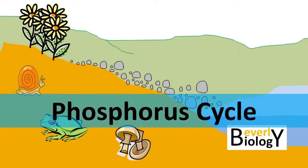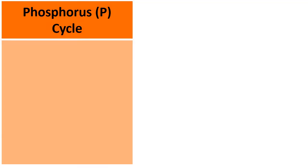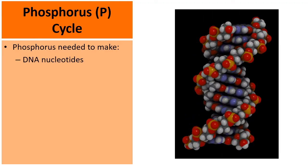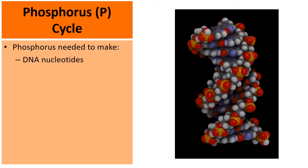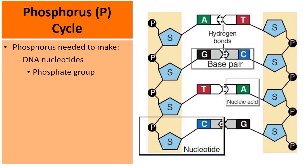The topic of this presentation is the phosphorus cycle. Why do we need phosphorus? Here's a molecule of DNA. DNA is made from building blocks called nucleotides. If we look at this diagram right here, we can see the phosphate groups labeled with the black circle with the letter P. Within a phosphate group is phosphorus, so without phosphorus our cells can't make DNA.